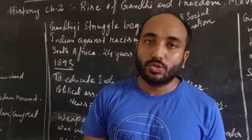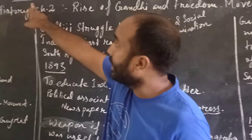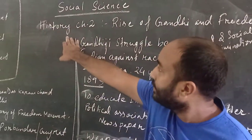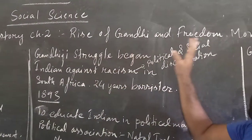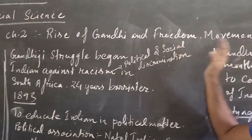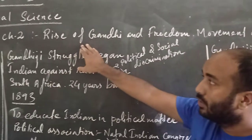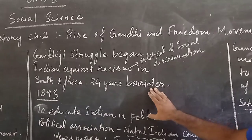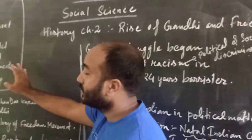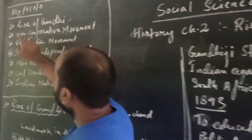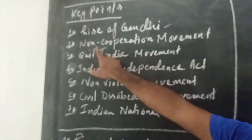Good morning students. Today we are going to discuss Social Science, chapter 2: Rise of Gandhi and Freedom and Development of India. This chapter we are going to discuss today. Let us look at the key points before going to the lesson. Here are the key points for this lesson.